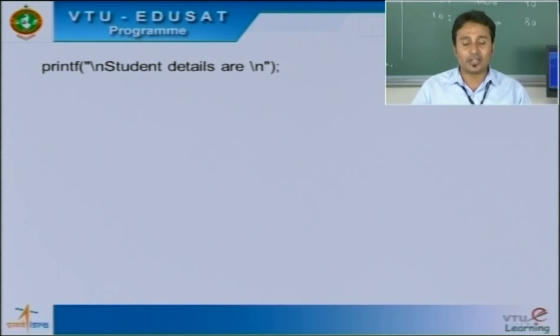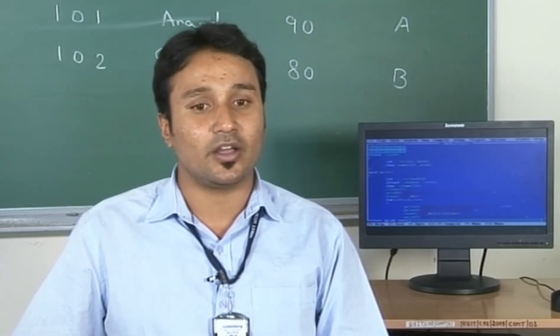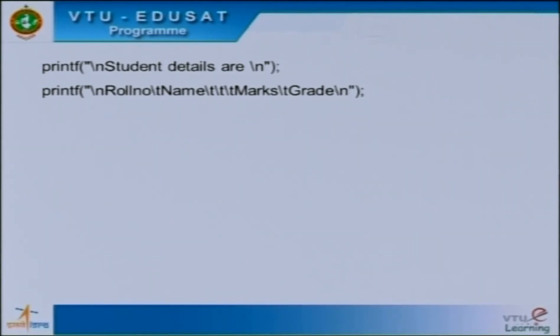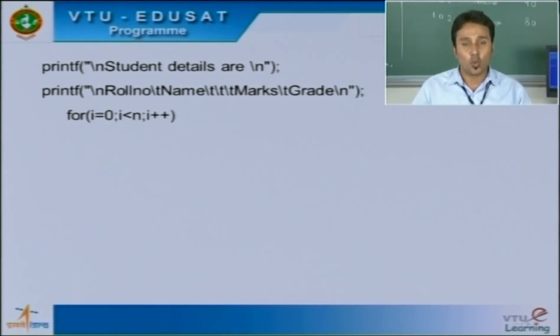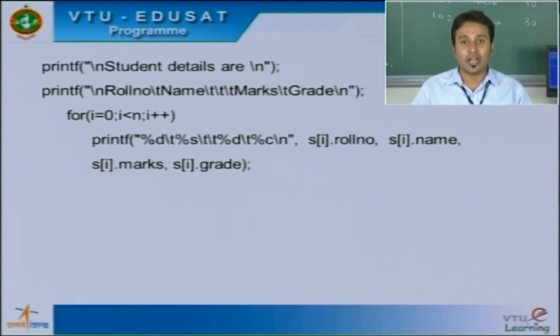Next we display the inserted student details. Having inserted roll number, name, marks, and grade for all students, we now display them. A printf heading is printed using \t tab escape sequences. Then a for loop from i=0 to i<n displays each student's data using format specifiers, accessing s[i].rollno, s[i].name, s[i].marks, and s[i].grade with the dot operator for each array of structure element.